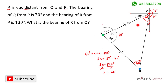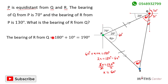We now have the angle we need to find the bearing of R from KL. The bearing is given by the full angle: from here to here is 90 degrees, from here to here is another 90 degrees, and the small angle is 10 degrees. So the bearing of R from KL equals 90 degrees plus 90 degrees plus 10 degrees, which is 190 degrees.